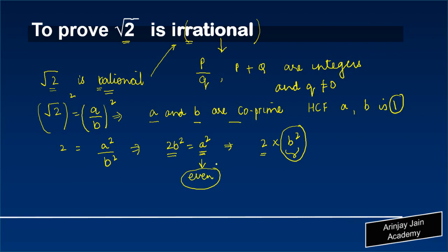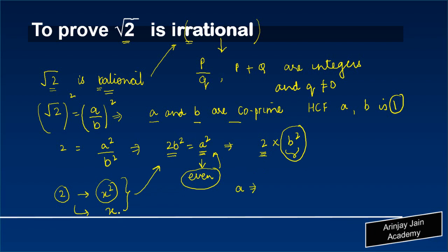Now, if there is an even number A square, by the theorem we learned earlier — that if there is a prime number, which in our example is 2, and it divides any given number which is let's say X square, then 2 would also divide X. The implication here is that if A square is an even number, or in other words A square can be divided by 2, then the value of A is also divisible by 2. Effectively meaning that A can be written as a multiple of 2 times some other number. Let's call that number M.